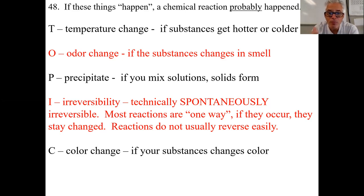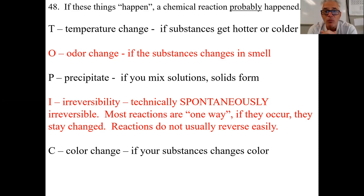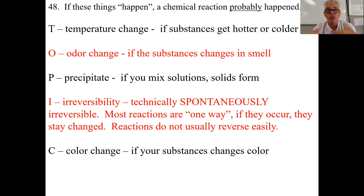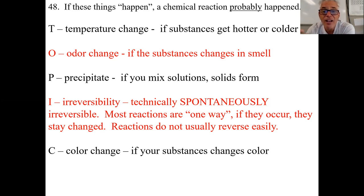C is for color change. If you mix two clear solutions and get a green one, something new must have formed with a different color. Color changes — from colorless to a color, from one color to a different color, or even from purple to clear — usually indicate a chemical reaction happened, because something new is there with new properties and whatever was there before has changed.